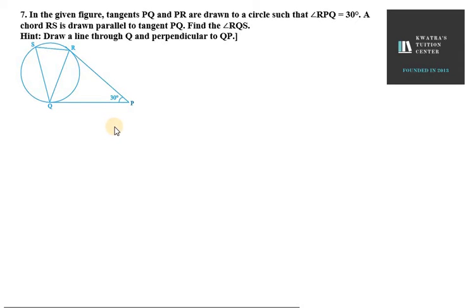Hello everyone, let's start with question number 7. In the given figure, tangents PQ and PR are drawn to a circle such that angle RPQ is 30 degrees. A chord RS is drawn parallel to tangent PQ. Find angle RQS. Let's start by looking at what is given to us.